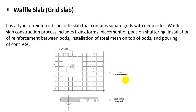Then we will go for waffle slab, also known as rigid slab. It is a type of reinforced concrete slab that contains a square grid with deep sides. The waffle slab construction process includes fixing formwork, placement of pods on shuttering, installation of reinforcement between pods, installation of steel mesh on top of pods, and pouring of concrete.